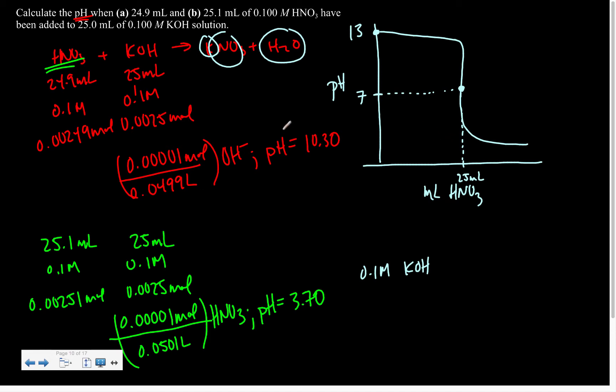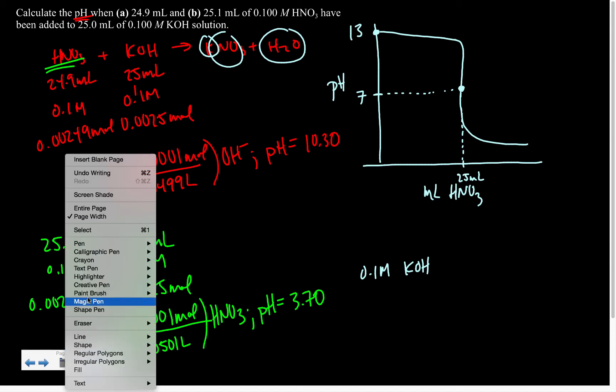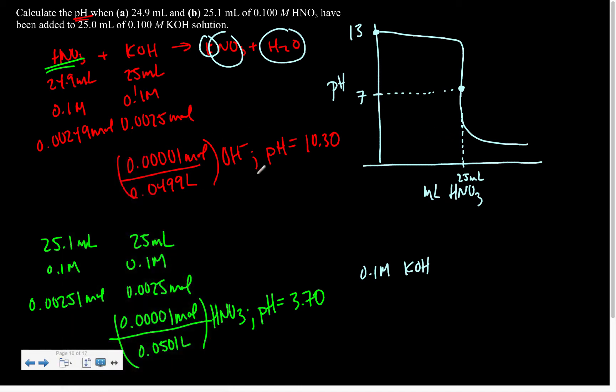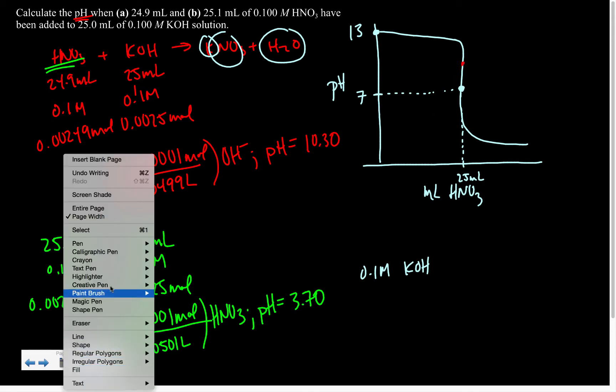Which means that really we're just reflecting the pH of water. So in terms of where we are, 24.9 mL might be right up there at the red dot and 25.1 mL might be at the green dot.